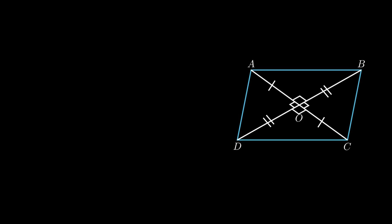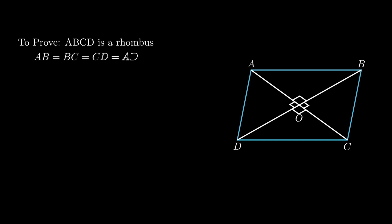From these given conditions, we need to prove ABCD is a rhombus — that is, all sides of the quadrilateral ABCD are equal.